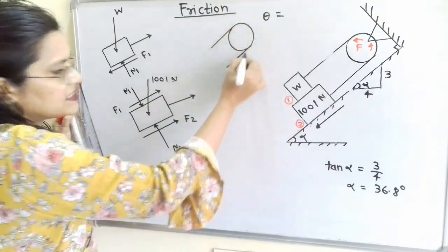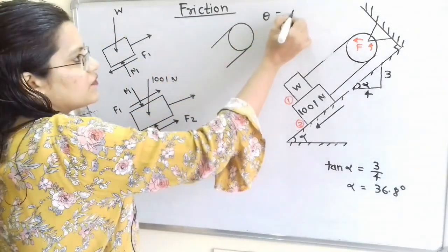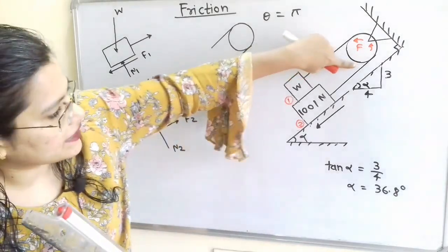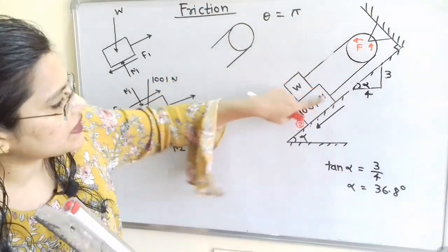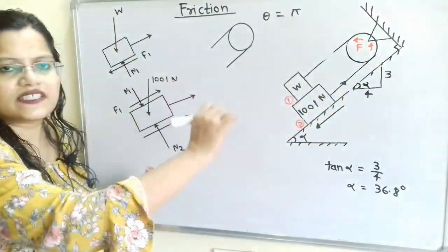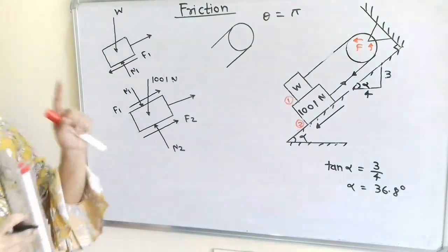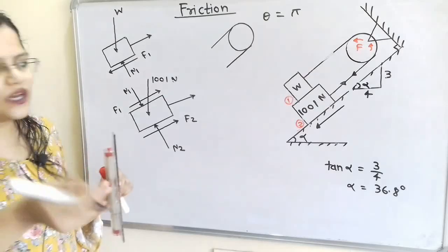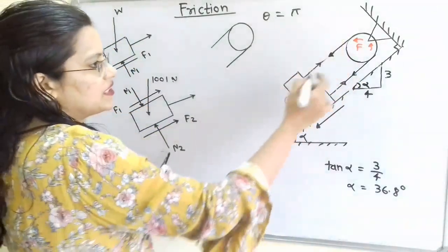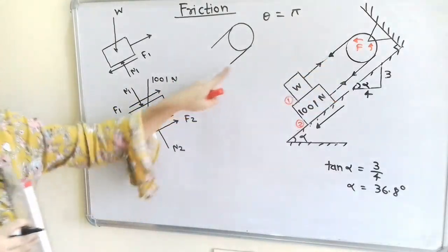For the disk, the angle of contact theta between the rope and the disk is 180 degrees, which equals pi radians — determined by observation. Tensions act outward from the disk on both sides. The rope section between the 1001 Newton block and the disk has tension in the downward direction parallel to the inclined surface, with frictional force in the opposite direction.